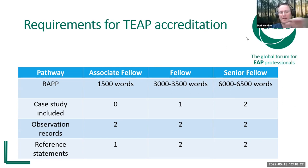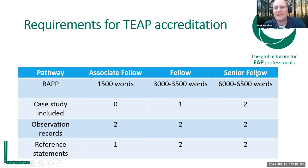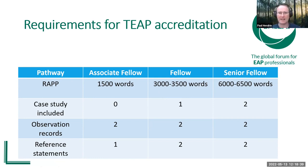The three pathways are on your screen here, and we can see how many words are expected at the three different levels. At associate fellow it's 1,500; fellow, three to three and a half thousand; and senior fellow, six to six and a half thousand. Those familiar with the old scheme will notice that senior fellow has been reduced slightly.